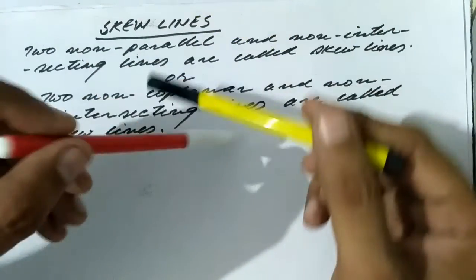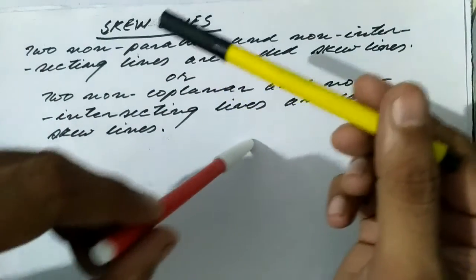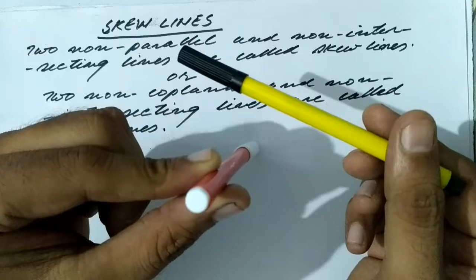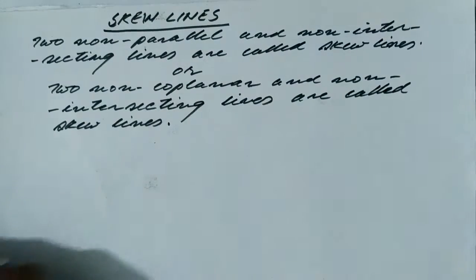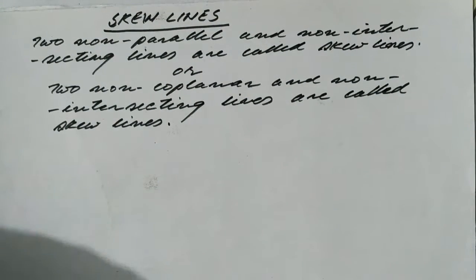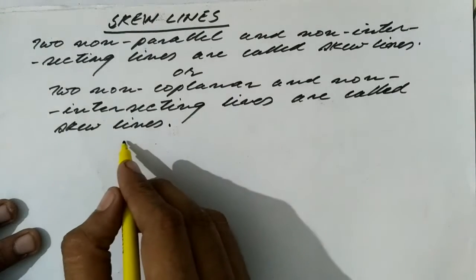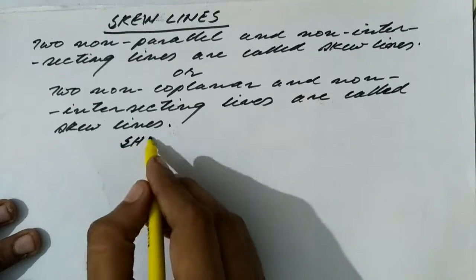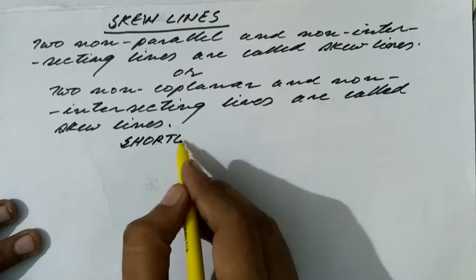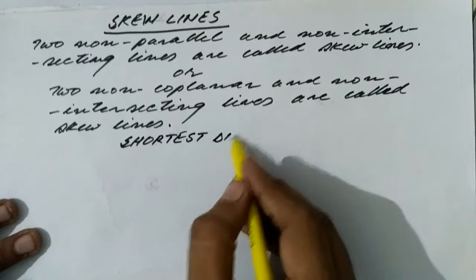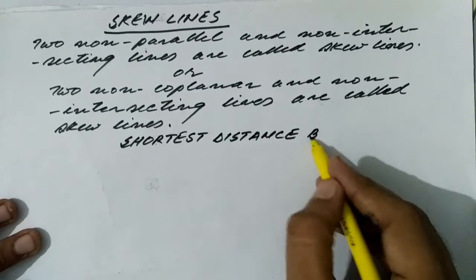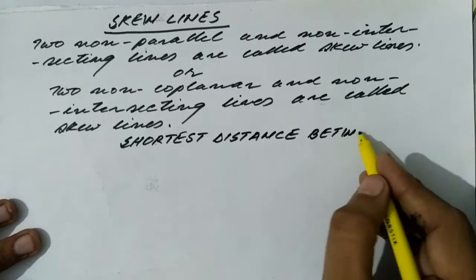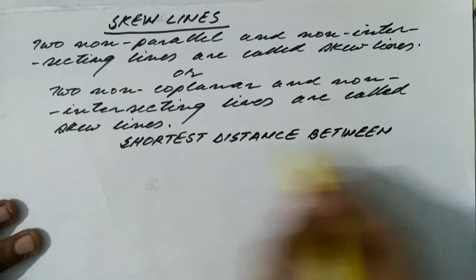This is just like these two pins. These two pins lie in different planes and they are not intersecting, so we can understand Skew Lines with this example. Because on paper it is difficult to understand — as I have told in my previous videos, it is impossible to depict a three-dimensional concept on a two-dimensional plane.